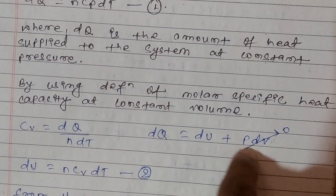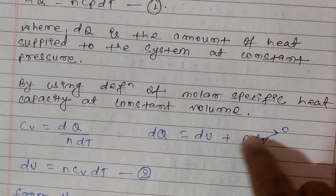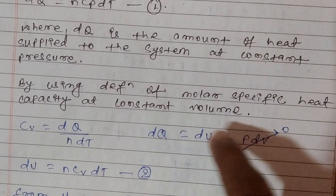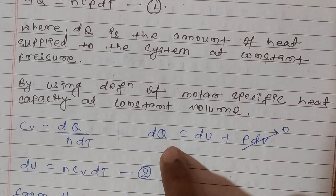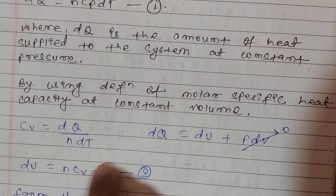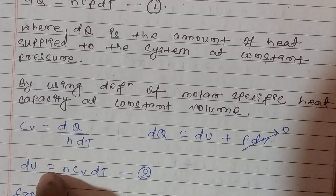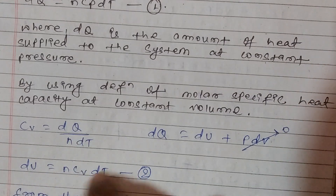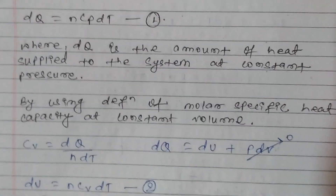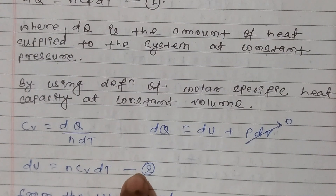And DQ is equal to DU plus P dV. At constant volume, dV is equal to zero, so P dV equals zero. Therefore DQ is equal to DU. CV is equal to DQ upon N DT, so DQ equals DU equals N CV DT. The first relation is DQ equals N CP DT, and the second relation is DU equals N CV DT.